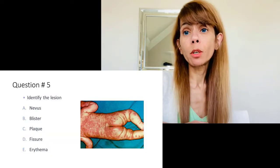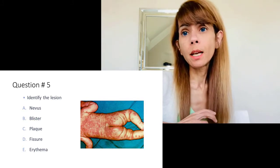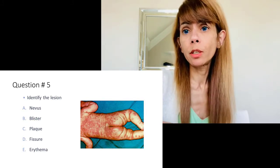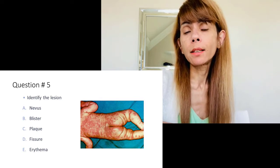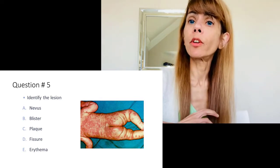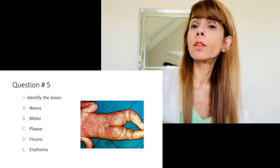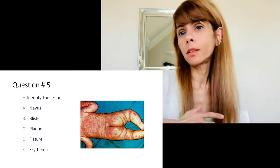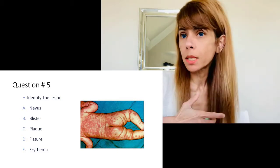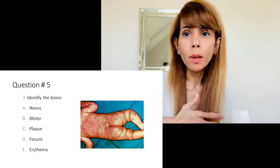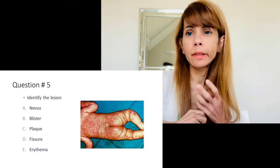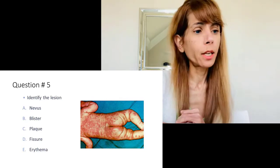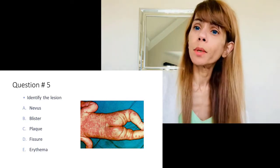Question number five is about a young child with his back exposed. The question asks what type of lesion it is. It is red and flat, and we can call it erythema because it is not vesicular, not black, has no fluid, no plaque, no thickness or scaliness, and no fissure or skin breakage. So we can easily call it erythema.